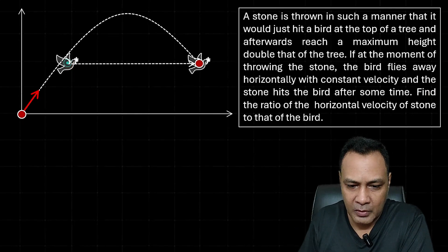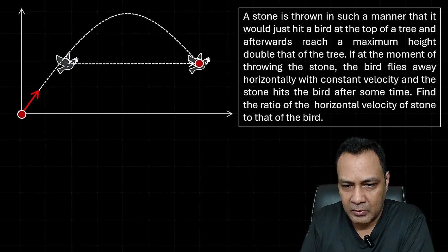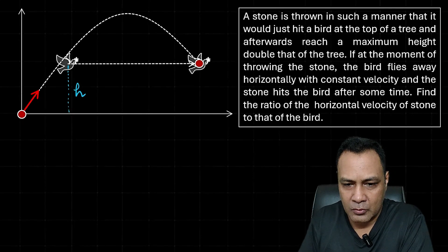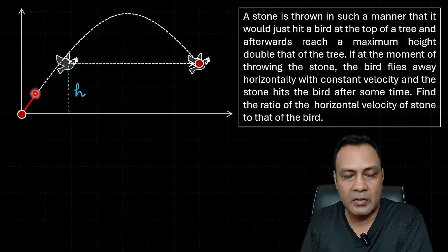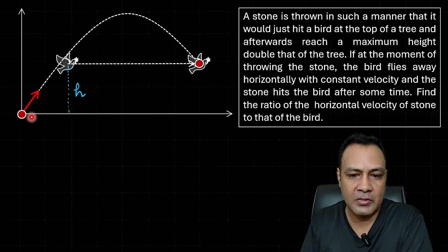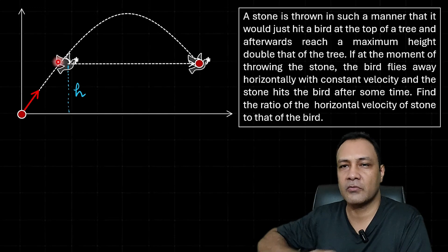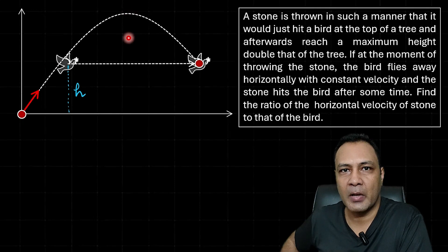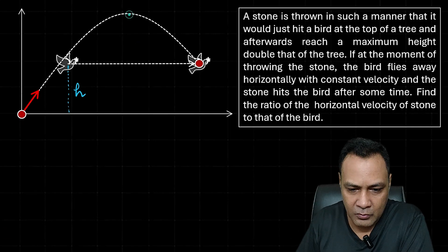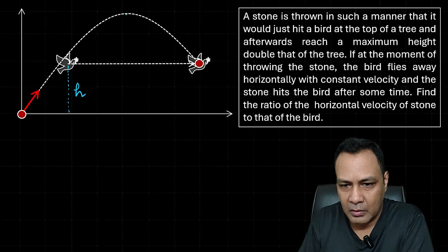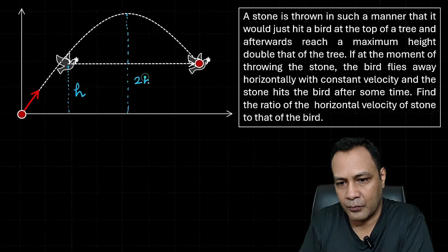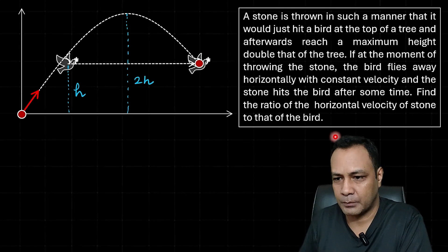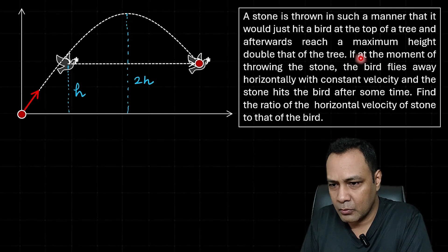The bird is sitting on a tree of height h. The stone is thrown at such an angle that it just touches the bird at the top of the tree. After touching the bird, the stone reaches a maximum height of 2h. That is the first situation.